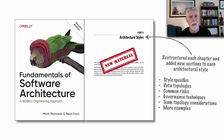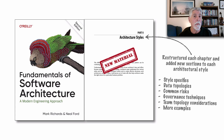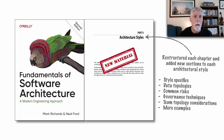We also added governance techniques on how to govern these kinds of architectures, team topology considerations about which team topologies match well with each architectural style, and a few more examples of each architecture style within each chapter. Essentially, all of these things were not included in the first edition of the book.